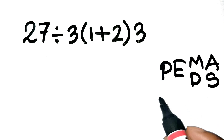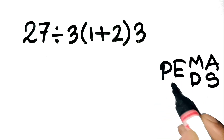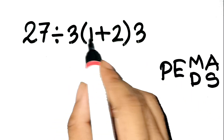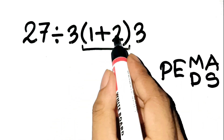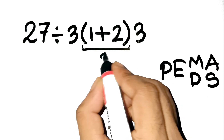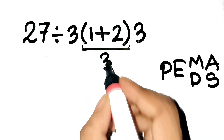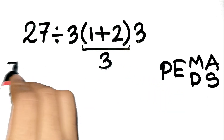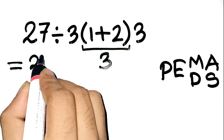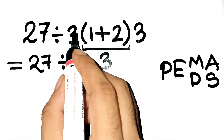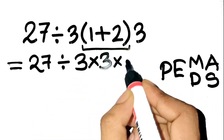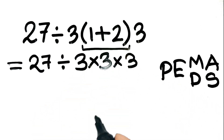Step 1: Parentheses. Inside the parentheses, 1 plus 2 equals 3. So the expression becomes 27 divided by 3 times 3 times 3.